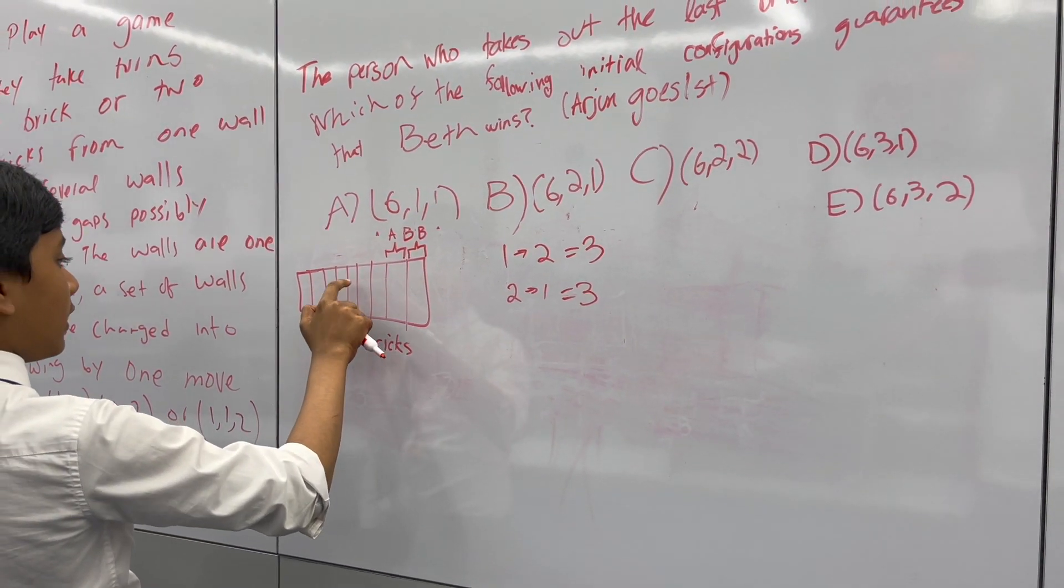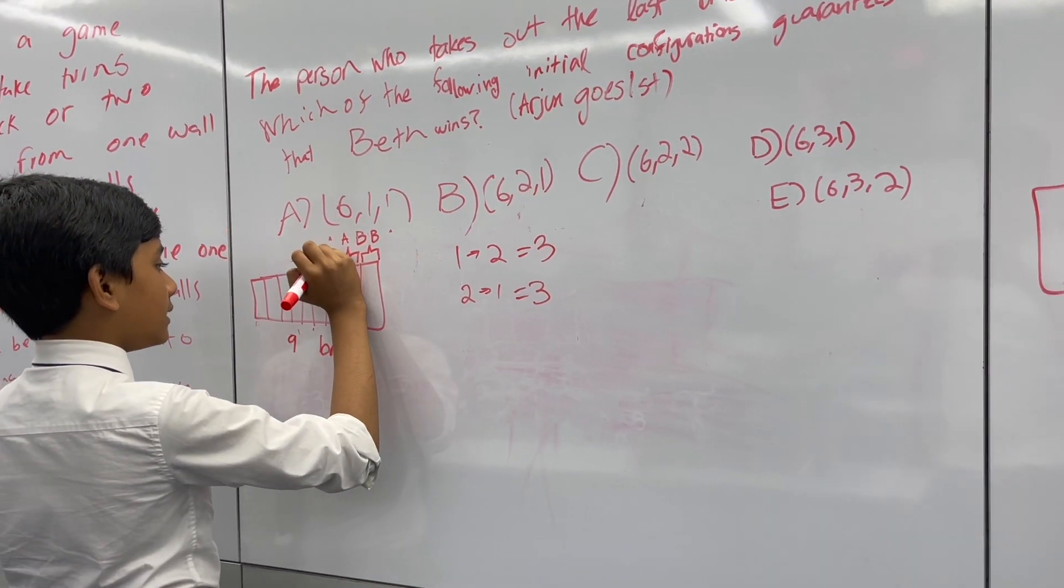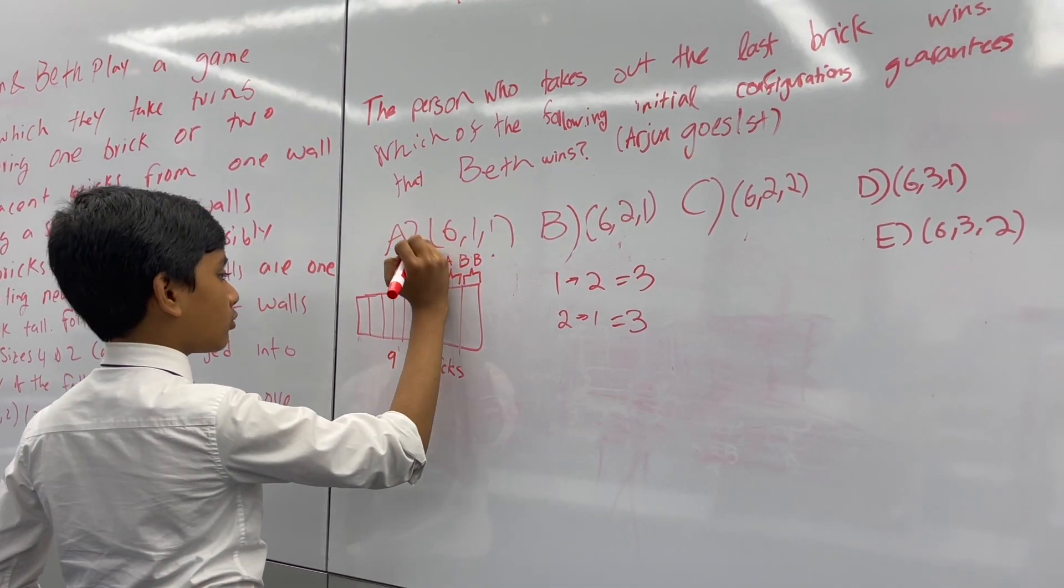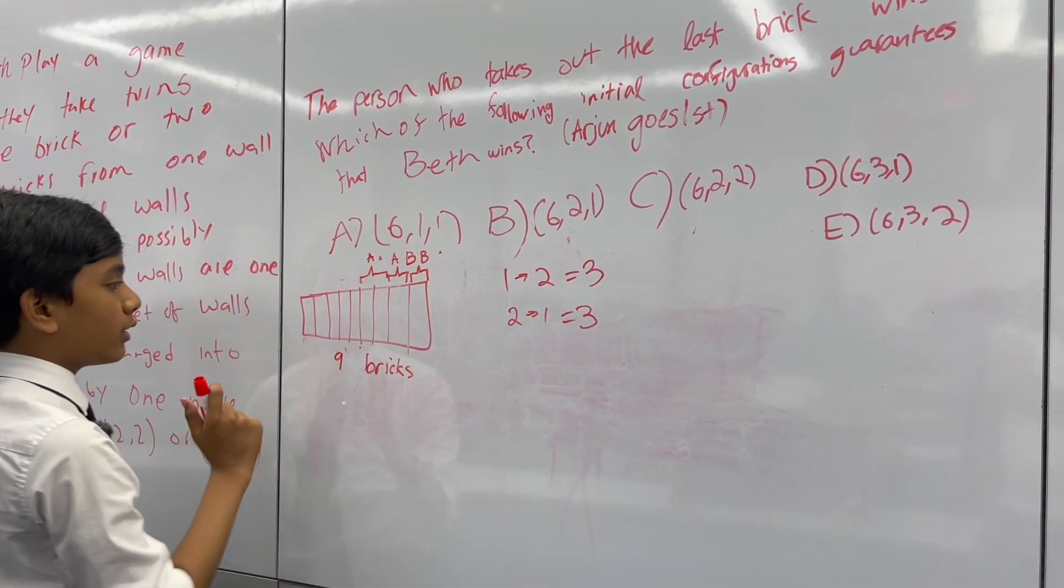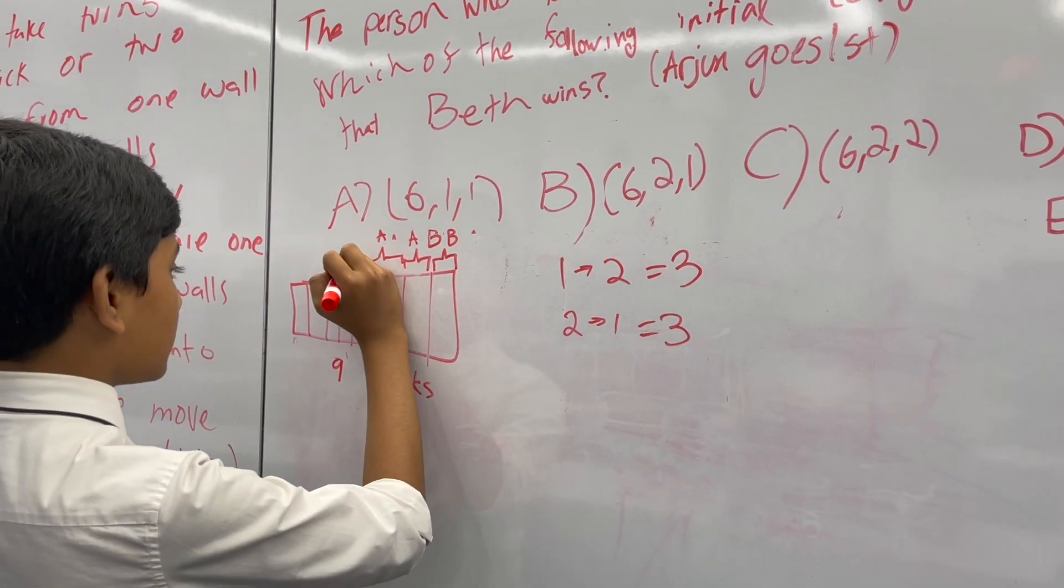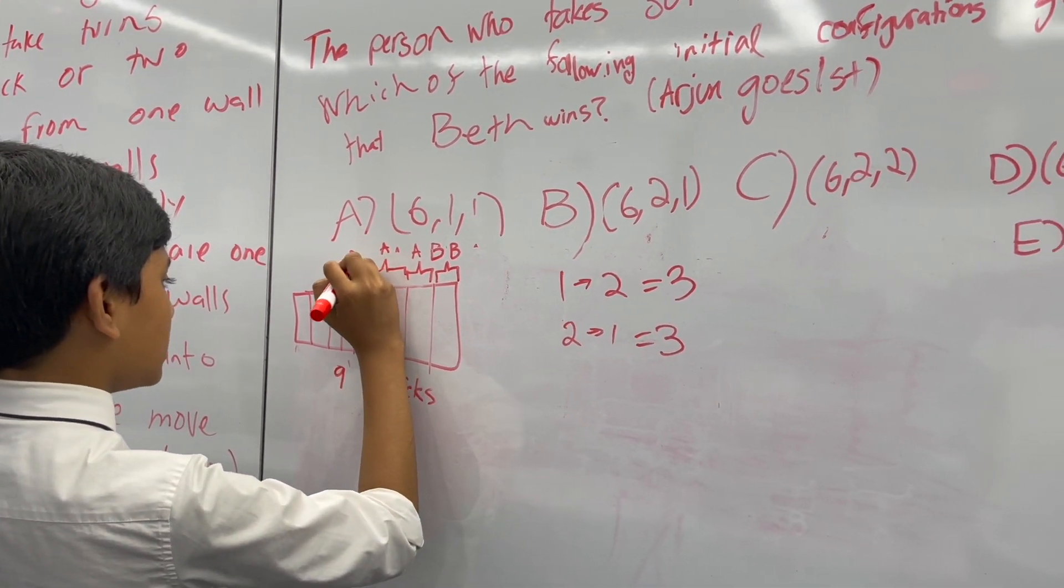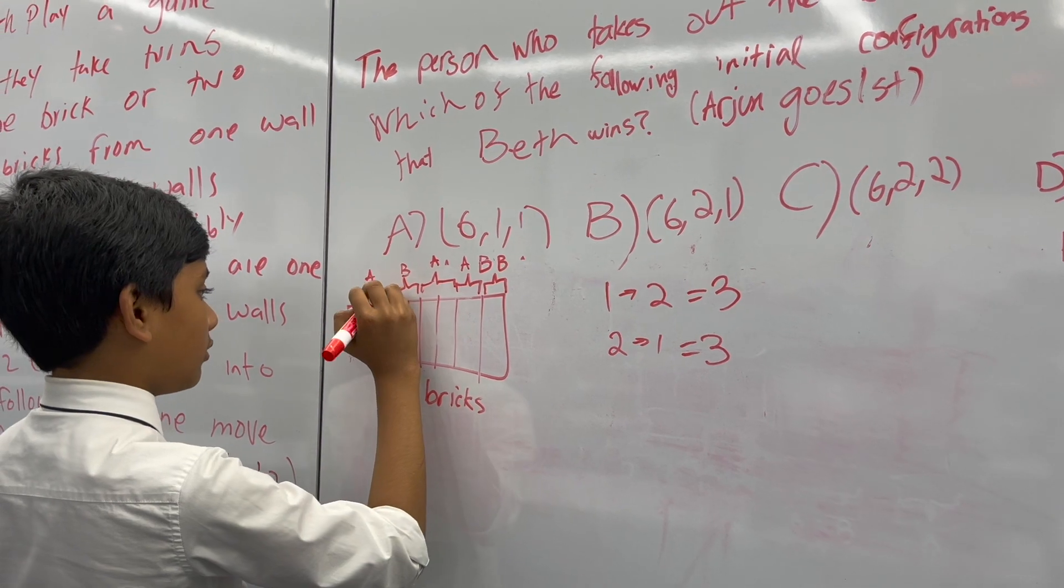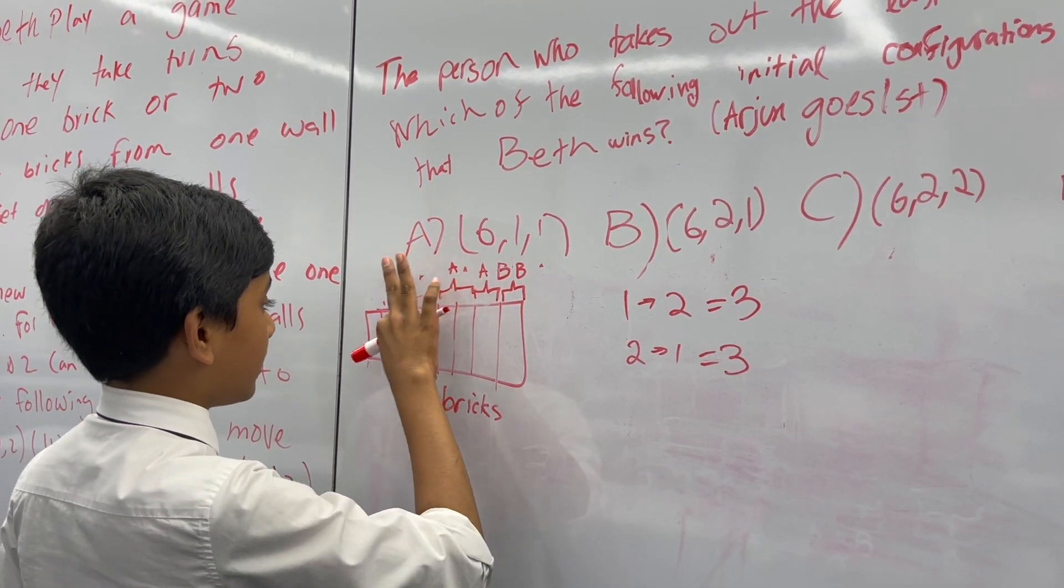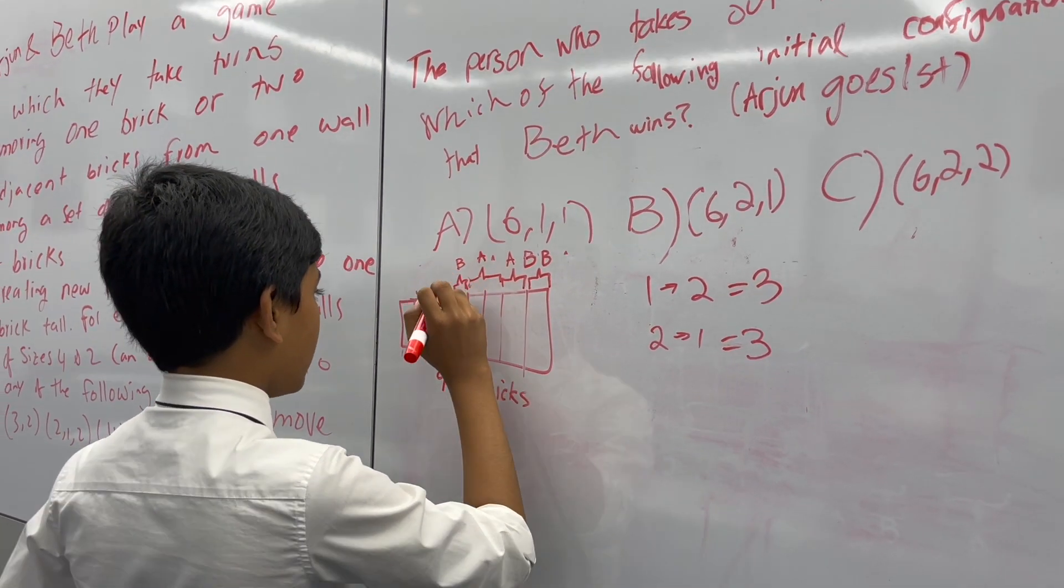One, two, three, four, five. Once this has happened, then Arjun is like, well, I can't let her have a multiple of three. So I'm going to take out two bricks. But then you know what Beth does? If Beth takes out two bricks, doesn't that mean Arjun can take out one brick and force a win?